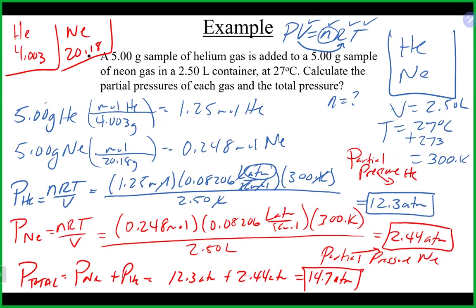That's just the ideal gas law done separately for each gas. The major contributor to pressure in this mixture is helium. The reason is that helium is lighter — only 4 g/mol versus 20 g/mol for neon. Because it's lighter, it flies around much faster, has a higher velocity, and causes more collisions. That's why it accounts for more pressure than the heavier neon, which moves slower due to its greater molar mass.